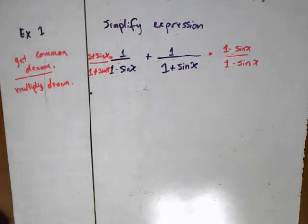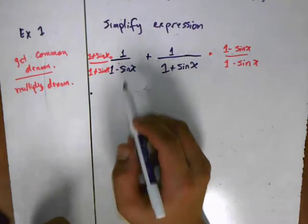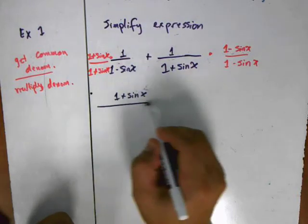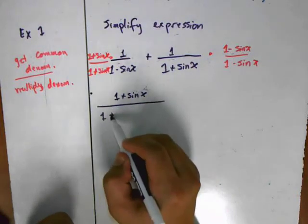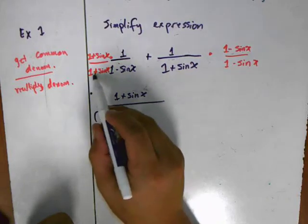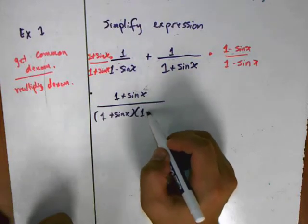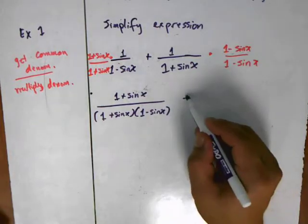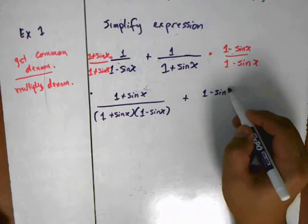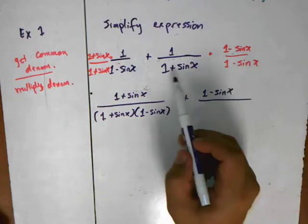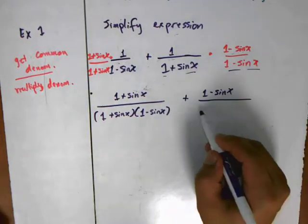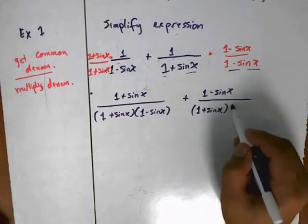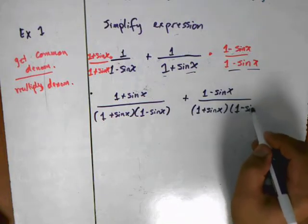Now I'm going to simplify this problem. On the top here on the left side I'm going to have 1 plus sine x times 1 minus sine x. The right term I'm going to have 1 minus sine x on the top, and on the bottom I'm multiplying this denominator and this denominator, so I'm going to have 1 plus sine x times 1 minus sine x.